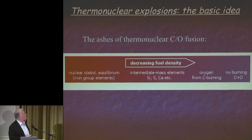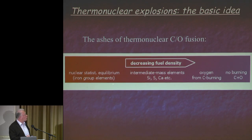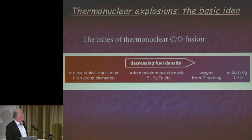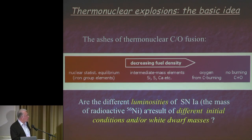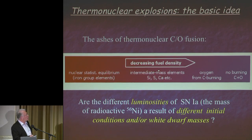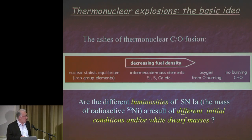A little bit of physics: thermonuclear explosions. The basic idea is we have the ash of carbon-oxygen fusion. At high densities there is nuclear statistical equilibrium—mostly iron group. With decreasing fuel density, we get intermediate mass elements, oxygen from carbon burning, and in the end nothing is burned. The different luminosities—the first parameter in the game—are believed to result from different masses of radioactive nickel-56. It could be different initial conditions, higher or lower density, or it could be different white dwarf masses. I will argue all of that is a reason—there's a main reason, but there are several.